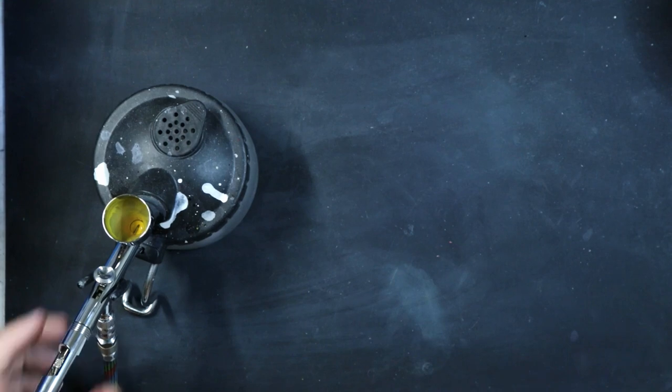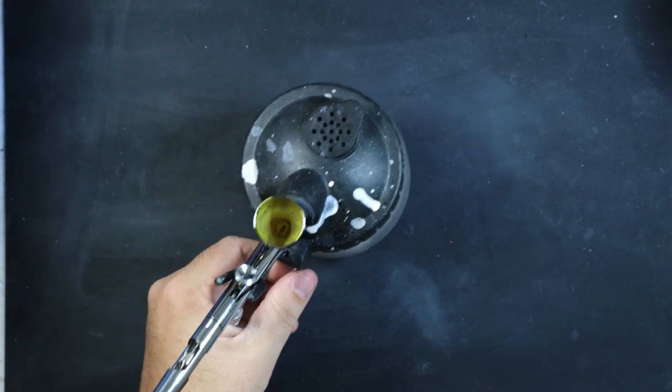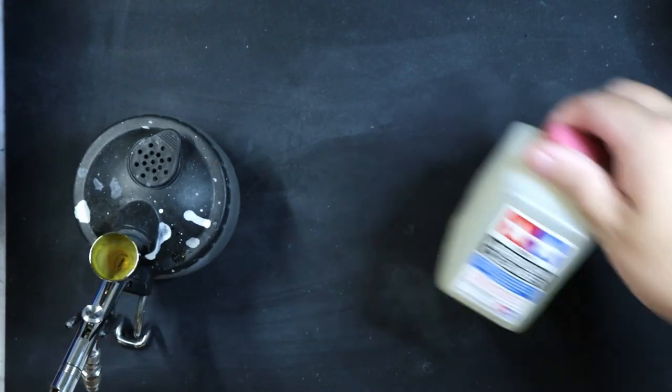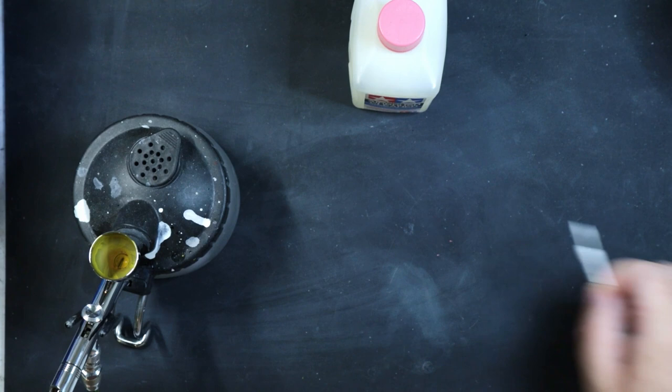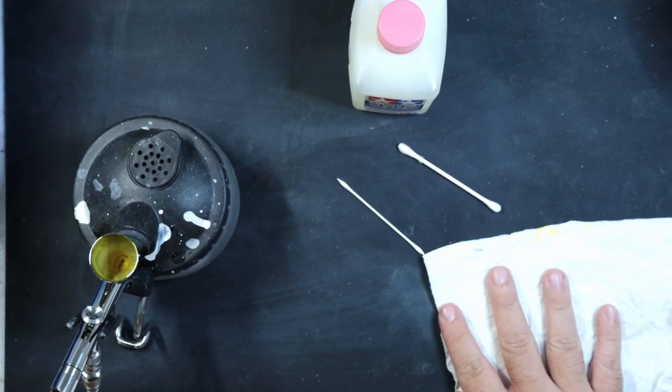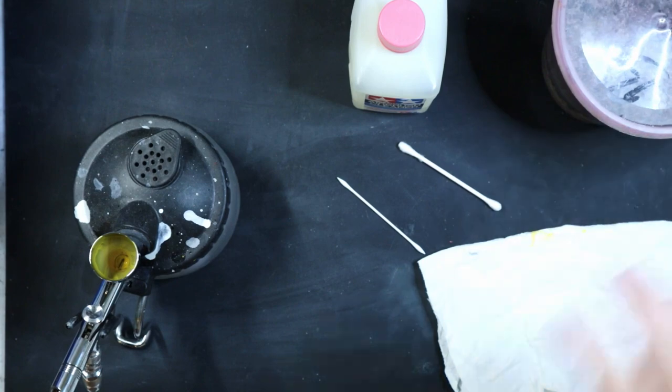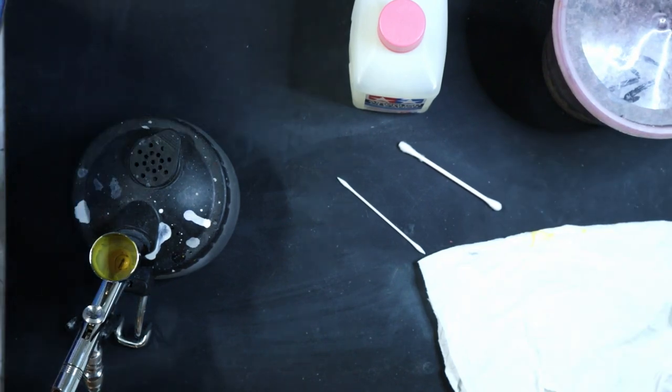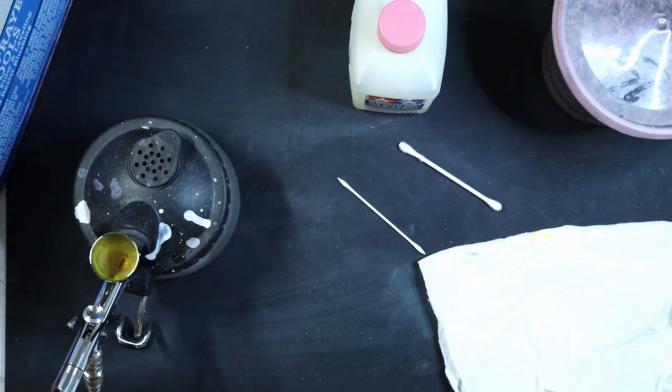Before we can begin cleaning our airbrush, there's going to be a few things that we're going to need. First, you're going to need your dedicated airbrush cleaner. Next, you'll need some q-tips if you have access to them. If not, you can use a paper towel. You're also going to need your slop cup so you can dump out any excess paint or thinner, which leads us to our last thing: the thinners that we use if you're using solvent-based paint.